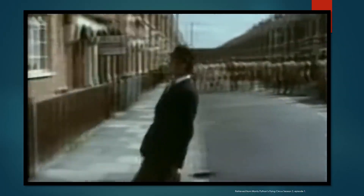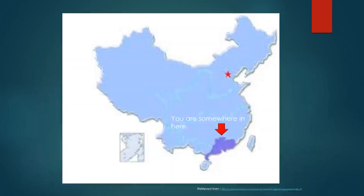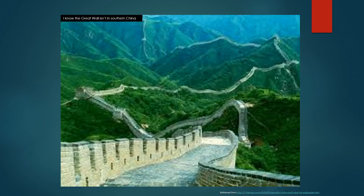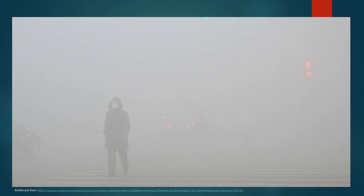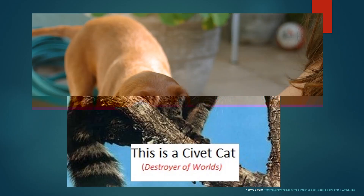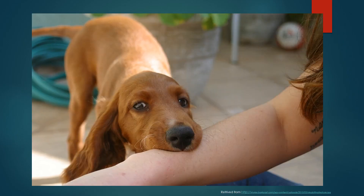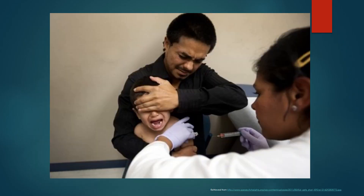Imagine for a minute you are walking around China, and in particular the Guangdong province, enjoying its beautiful scenery. Of course, being China, it kind of looks more like this. While out on your walk, this thing decides to bite you. Being the smart person you are, you go to a hospital to get a rabies shot. With hydrophobia prevented, you head back home healthy.